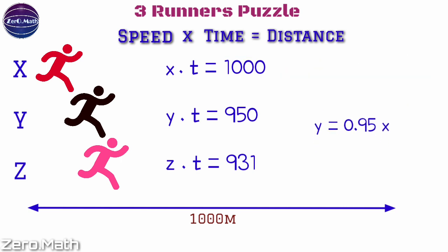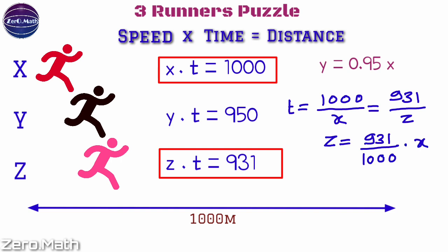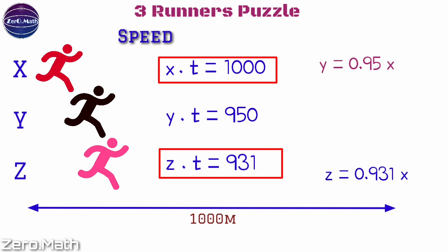Similarly, we can write down another equation for comparing X and Z: t = 1000/x which equals 931/z. Hence z = (931/1000) × x, so z = 0.931x.